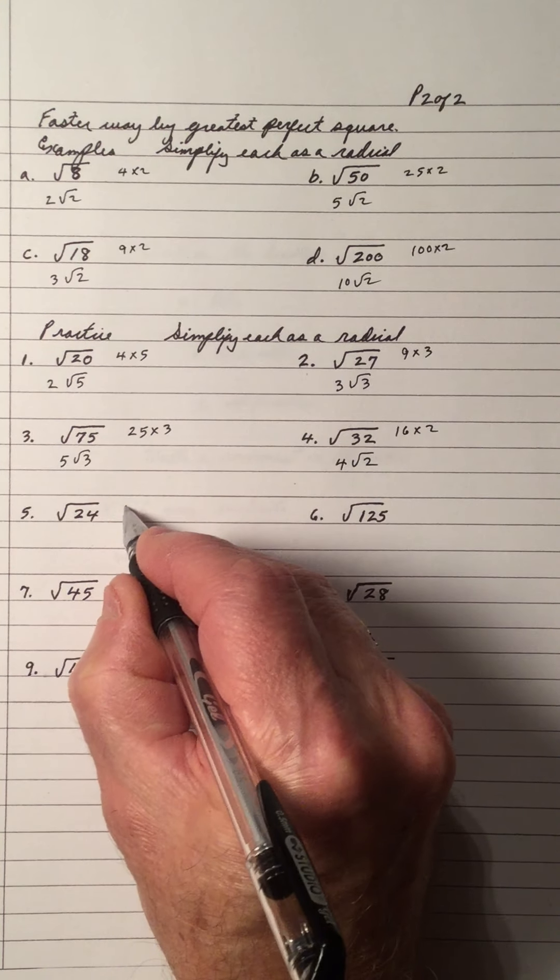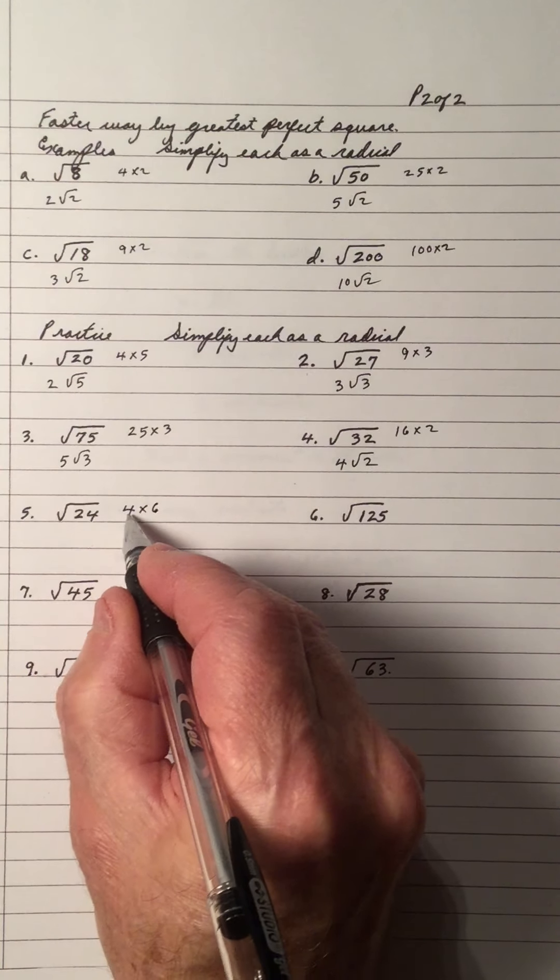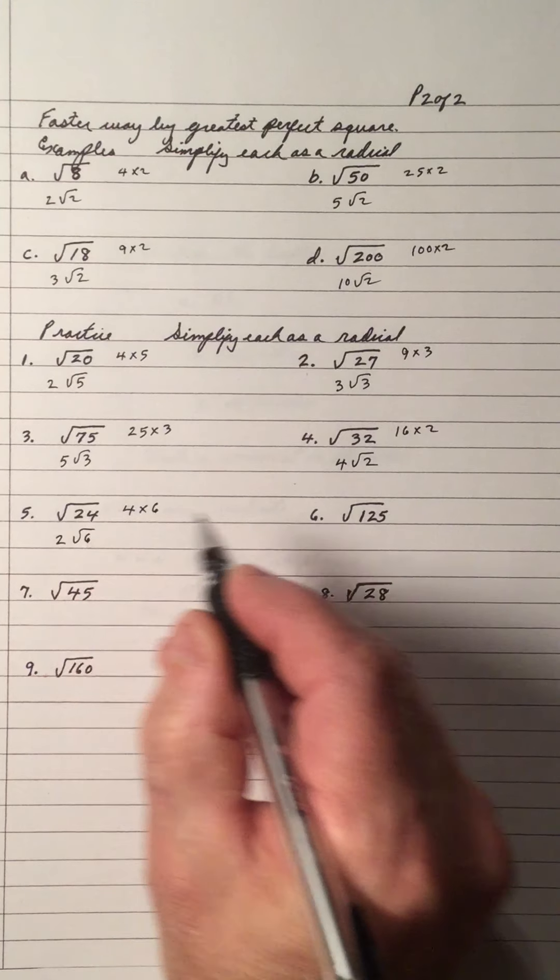And 24. The largest perfect square is 4. And it's 4 times 6. It gives you 24. The square root of 4 is 2. And you get root 6.